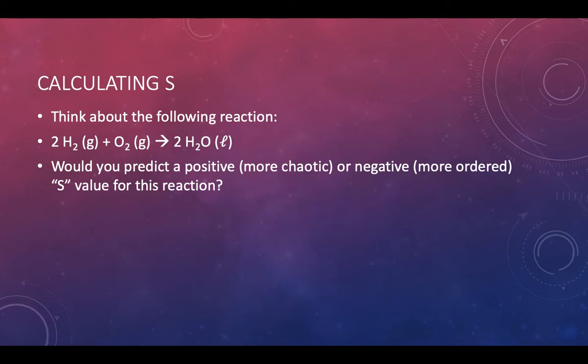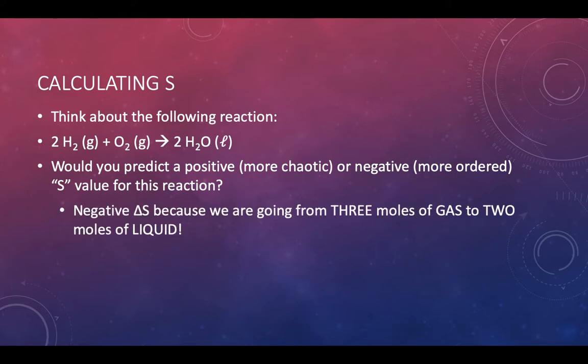Without any numbers at all, you should be able to make the prediction of whether or not it's becoming more chaotic, or more ordered, based on the things that we were talking about on that previous slide, when it was asking you to compare a solid at 50 degrees versus 30 degrees, or solids versus liquids versus gases, or mixtures versus pure substances. When we're going from three moles of gas to two moles of liquid, we're becoming more ordered than we were to start. So that would be a negative S value overall.